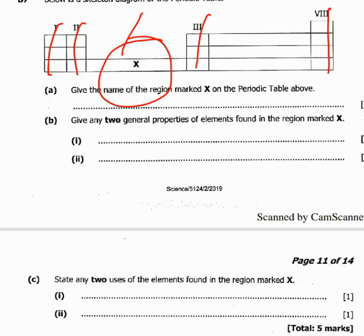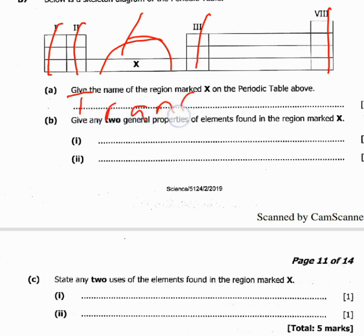The noble gases, or inert gases, are stable elements — they do not need to react with any other element, so they do not undergo any chemical reaction. Now, the first question asks: give the name of the region marked X on the periodic table. The answer is: transition elements.